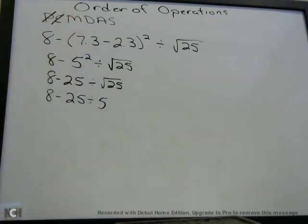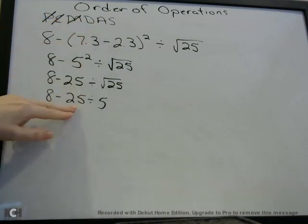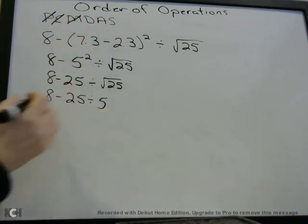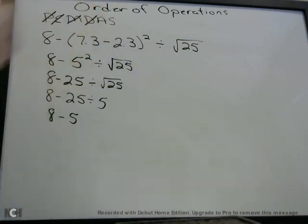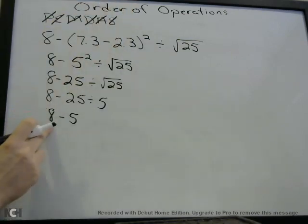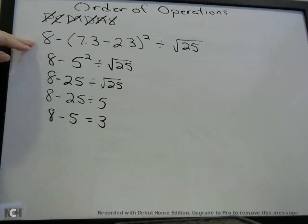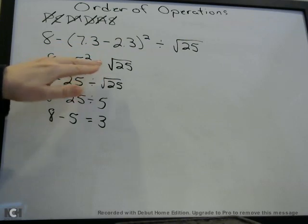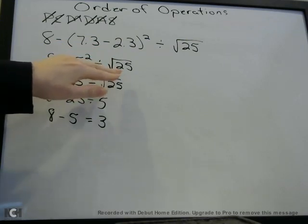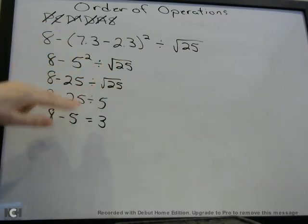So now we've gotten rid of all the exponents. We don't have any multiplication. We do have a division — now we're at D. We have 25 divided by 5. We all know 25 divided by 5 is 5. Done with division. We don't have any addition. We do have a subtraction: 8 minus 5 equals 3. So this expression, which kind of looks complicated at first, if you just work it step by step, the answer to it is 3. But remember, parentheses first, then exponents — and remember square roots, or if you have a cubed root, that's also considered an exponent, so you do that during the E phase. Then multiplication, then division, then addition, then subtraction.